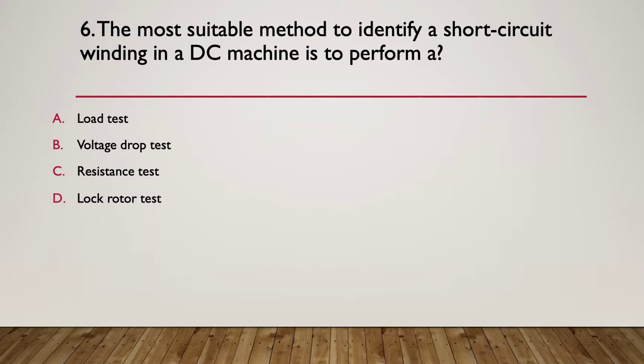Question six. The most suitable method to identify a short circuit winding in a DC machine is to perform what kind of a test? A. A load test. B. A voltage drop test. C. A resistance test. Or D. A locked rotor test. Most suitable to find a short circuit winding.